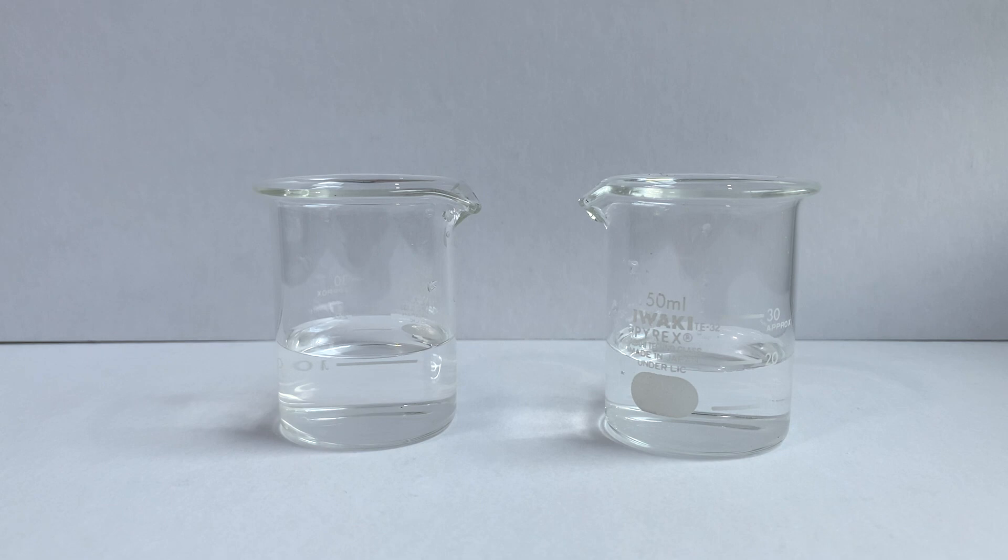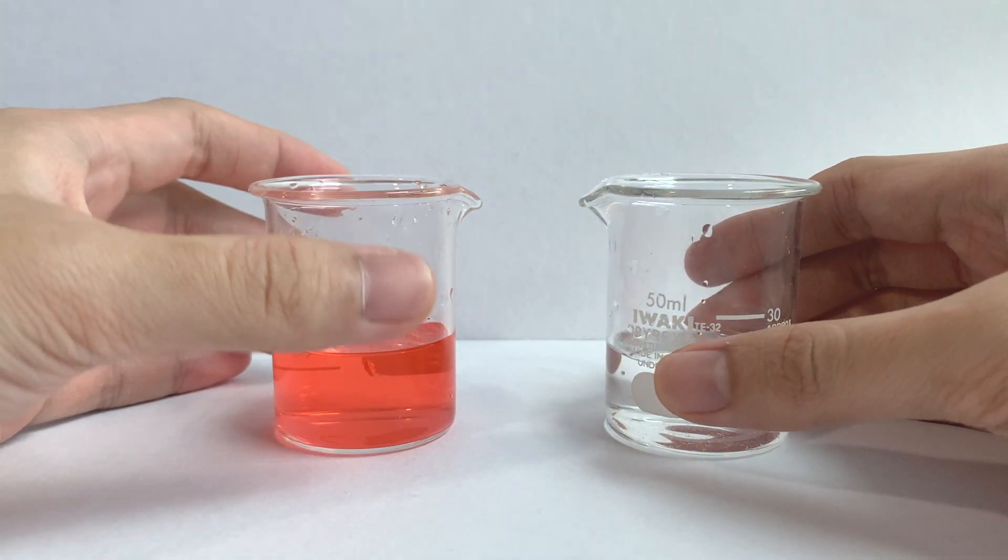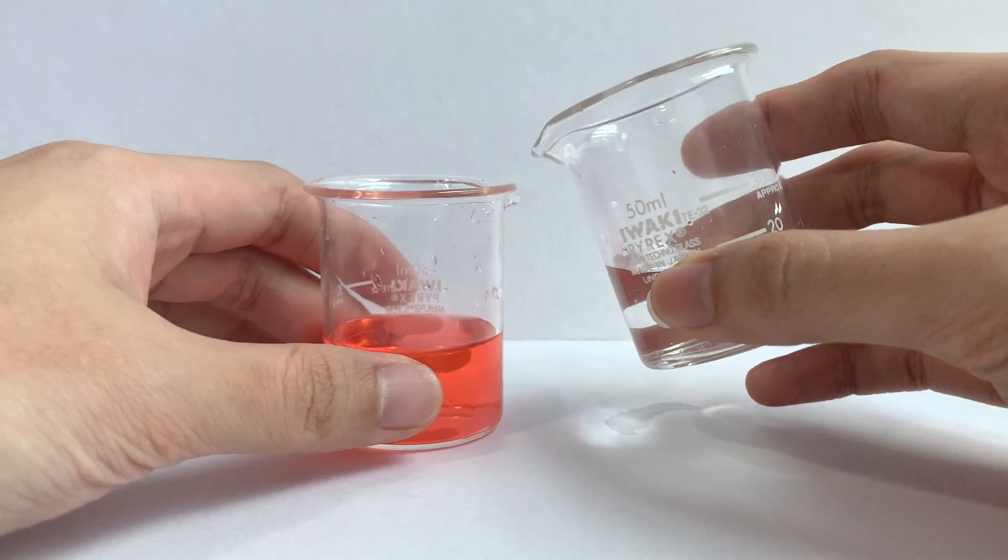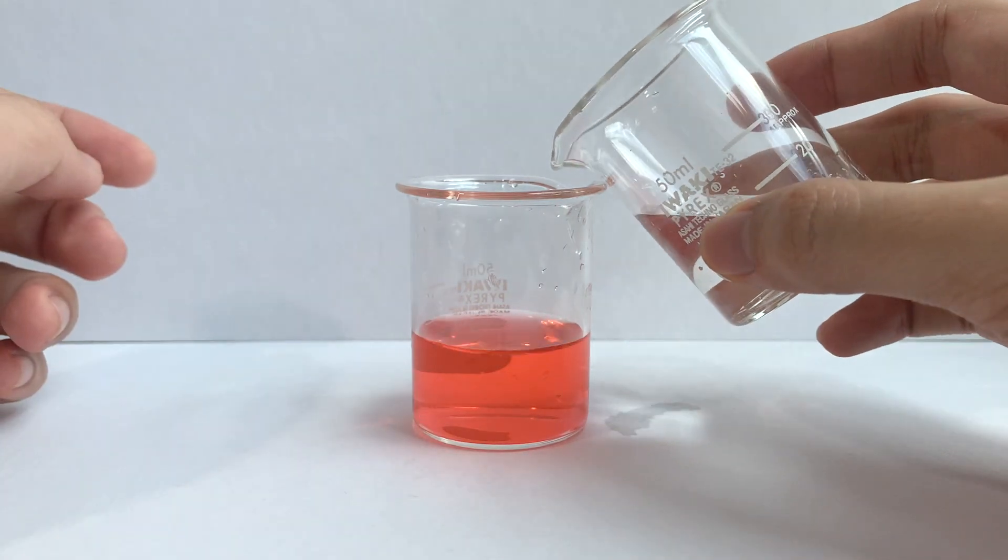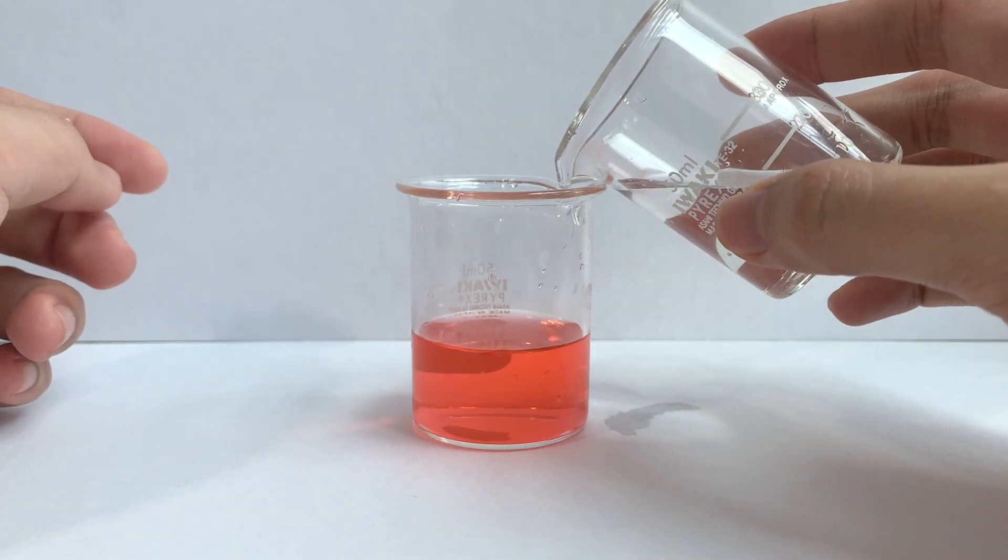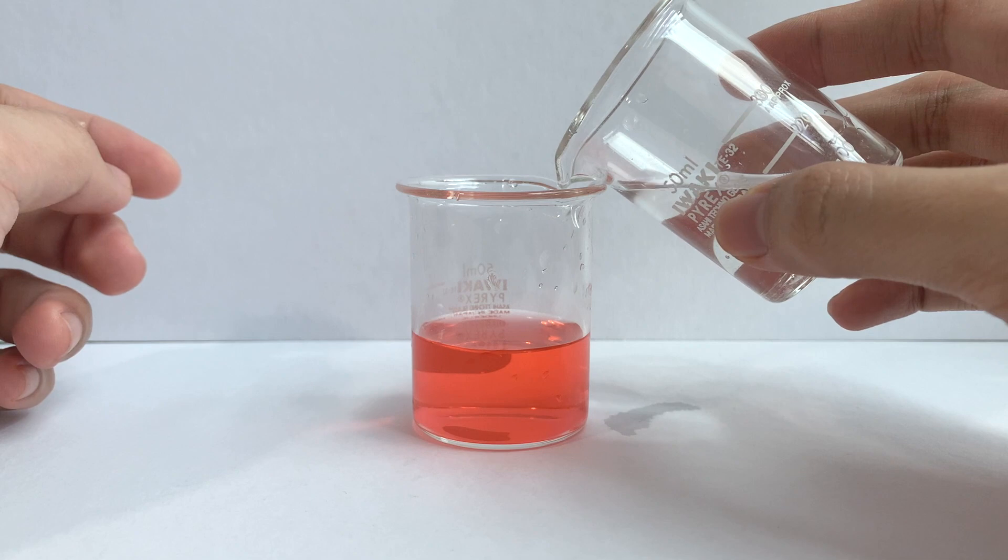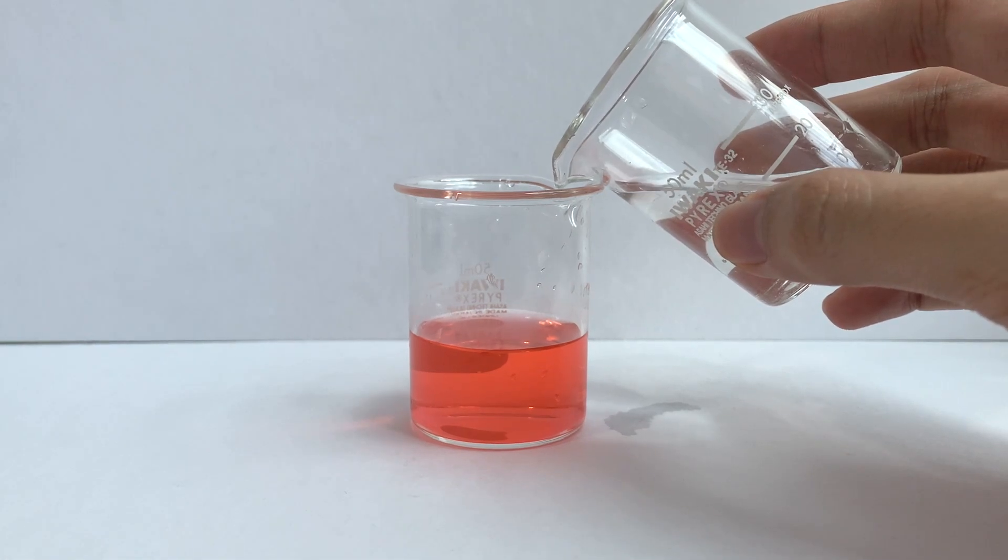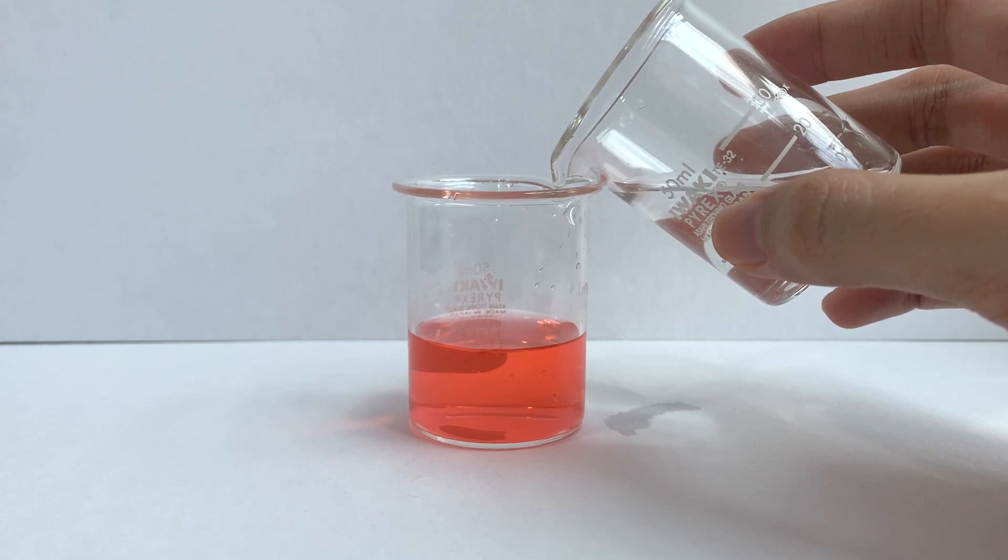Over here I'm going to add methyl orange to my acid. Methyl orange turns red when the pH is low such as in hydrochloric acid. So I'm going to add my sodium hydroxide in and stop when the indicator changes color. The color change that we expect to see will be from red to orange and then when there is an excess of alkali it will turn yellow.